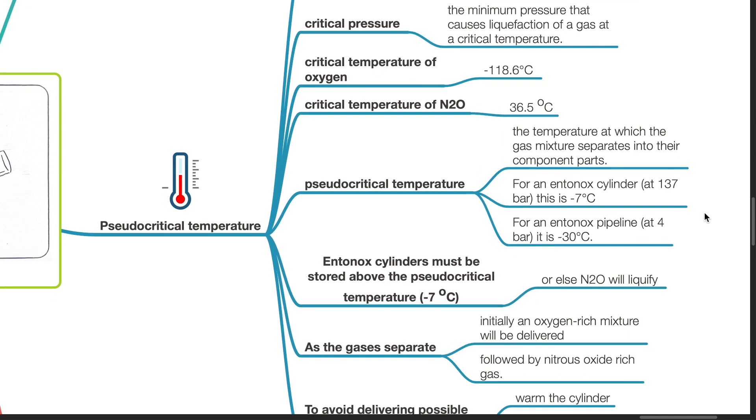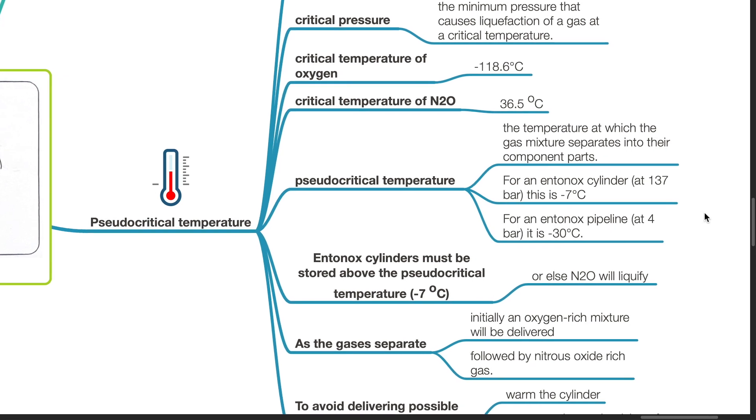Pseudo-critical temperature is the temperature at which the gas mixture separates into its component parts. For an Entonox cylinder at 137 bar, this is negative 7 degrees Celsius. For an Entonox pipeline at 4 bar, it is negative 30 degrees Celsius.